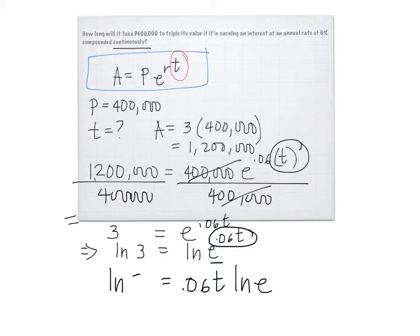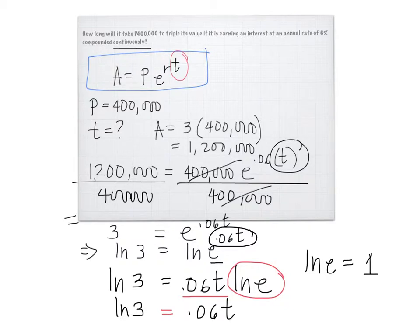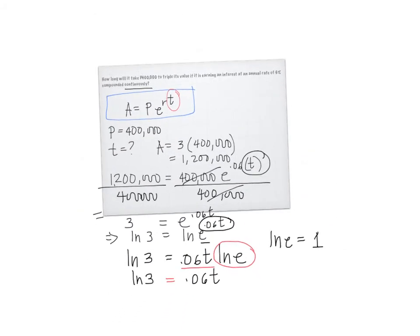That is why we needed to use ln. Now, ln e has a value equal to 1, so 0.06t times ln e is the same as 0.06t times 1. Anything multiplied by 1 will be the same. So this is 0.06t, then ln 3 is still ln 3.